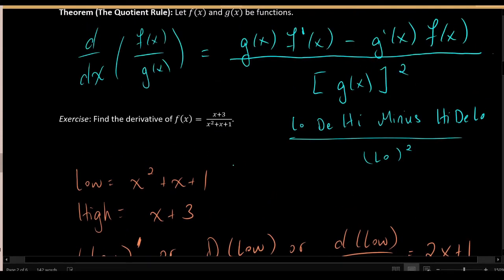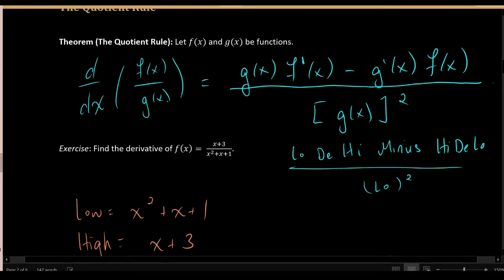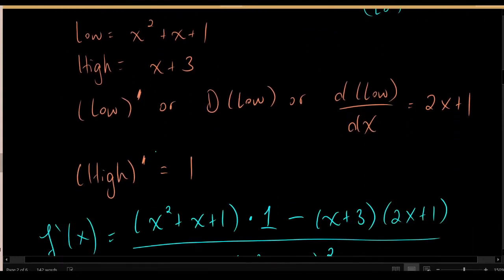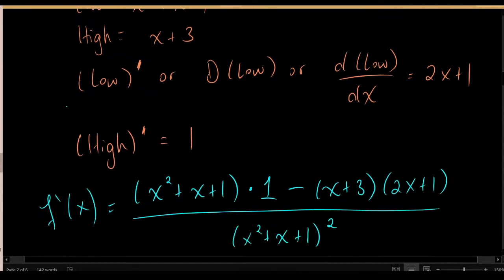In terms of notation, one thing to be on the lookout for is that in the quotient rule itself, f of x is used to represent the function in the numerator, but in most problems f of x also represents the entire fraction. That's why when I'm using this rule, I tend to write things in terms of low and high — low being the denominator, high being the numerator — so I don't have to worry about ambiguity.